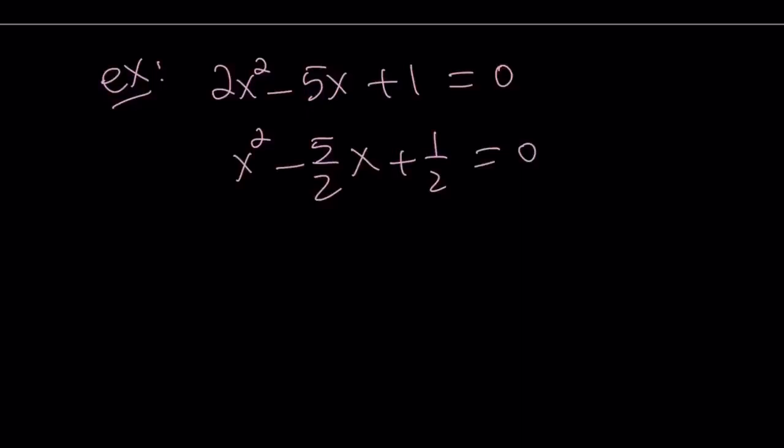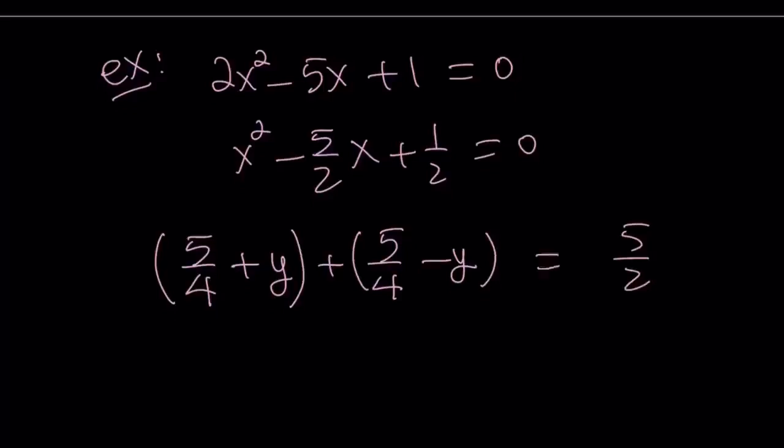Divide everything by 2. Now, you're thinking about the sum, which is always the opposite of b, negative b. You have to find two numbers whose sum is 5 halves, and they have to be symmetrical. Think about half of 5 halves, which is 5 fourths. So our numbers are 5 fourths plus y, and 5 fourths minus y. At this point, you can check that this sum is actually equal to 5 halves.